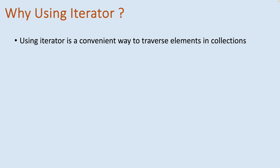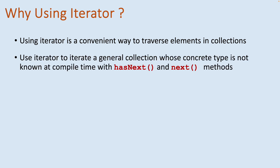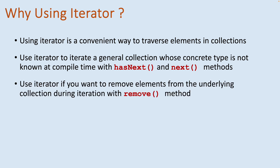Why use iterator? Using iterator is the convenient way to traverse elements in collections in the Java programming language. You can use iterator to iterate a general collection whose concrete type is not known at compile time, using its hasNext and next methods. Or you can use iterator if you want to remove elements from the underlying collection during iteration with its remove method.